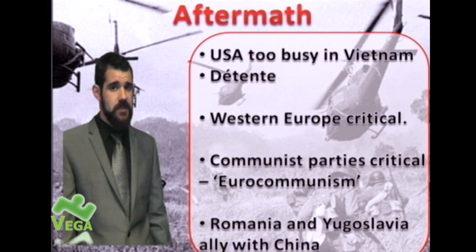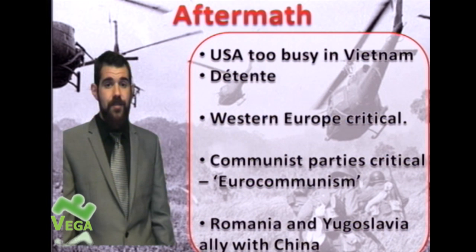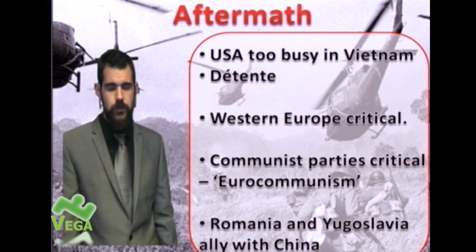Perhaps more seriously as far as Moscow is concerned, various communist countries also start to look away from Moscow as communist leadership. Romania, a Warsaw Pact country, and Yugoslavia, which is communist but not a Warsaw Pact country, make alliances with China, leaving the Russians a little bit isolated. That would have hurt Brezhnev a lot more than any of the other reactions.